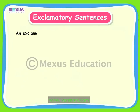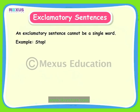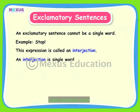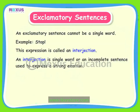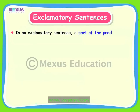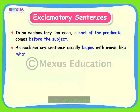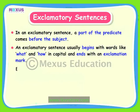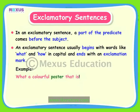Do remember that an exclamatory sentence cannot be a single word. For example, stop is not an exclamatory sentence — it is an interjection. An interjection is a single word or an incomplete sentence used to express a strong emotion. In an exclamatory sentence, a part of the predicate comes before the subject. It usually begins with words like what and how in capital and ends with an exclamation mark. In the previous example, a part of the predicate comes before the subject poster. It also begins with the word What with a capital W and ends with an exclamation mark.